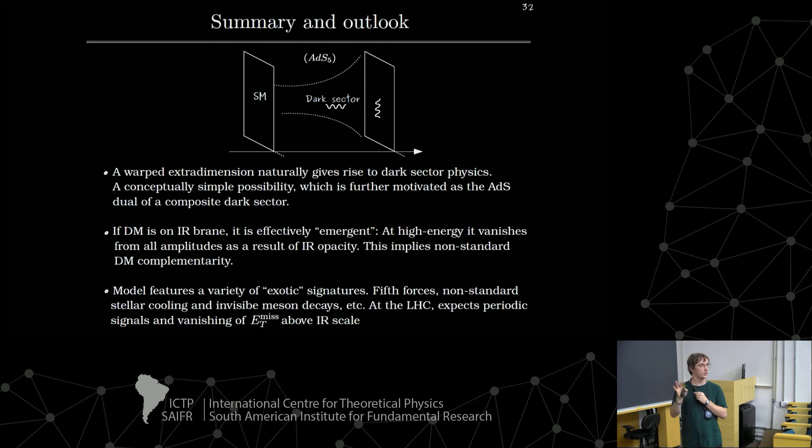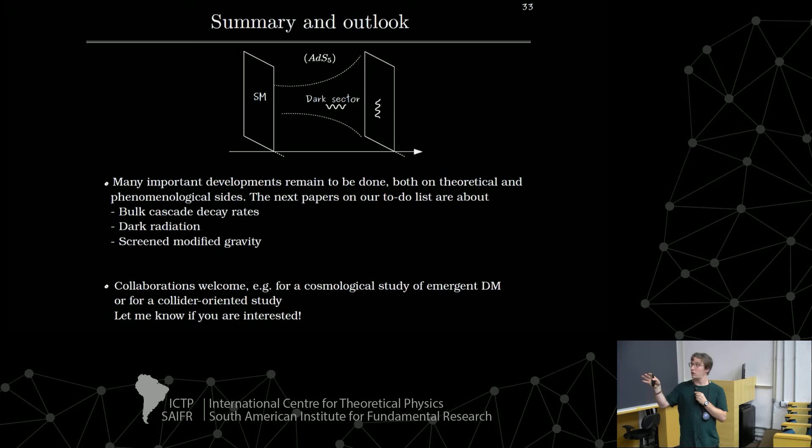All the details of the shapes depend on the dressing of the propagator by the bulk and the brane interactions. Here I'm showing the cross-section contribution. But in principle, you also have an interference between standard model and BSM and you expect the same kind of pattern. The fun thing is that if you want to look for this kind of signal, typically you have to take some kind of Fourier transform of your differential distribution. Or more precisely, a wavelet transform. This was discussed quite recently in these two papers. So this signature was first pointed out in the linear dilaton model. And here with this model, we bring extra motivation for this.